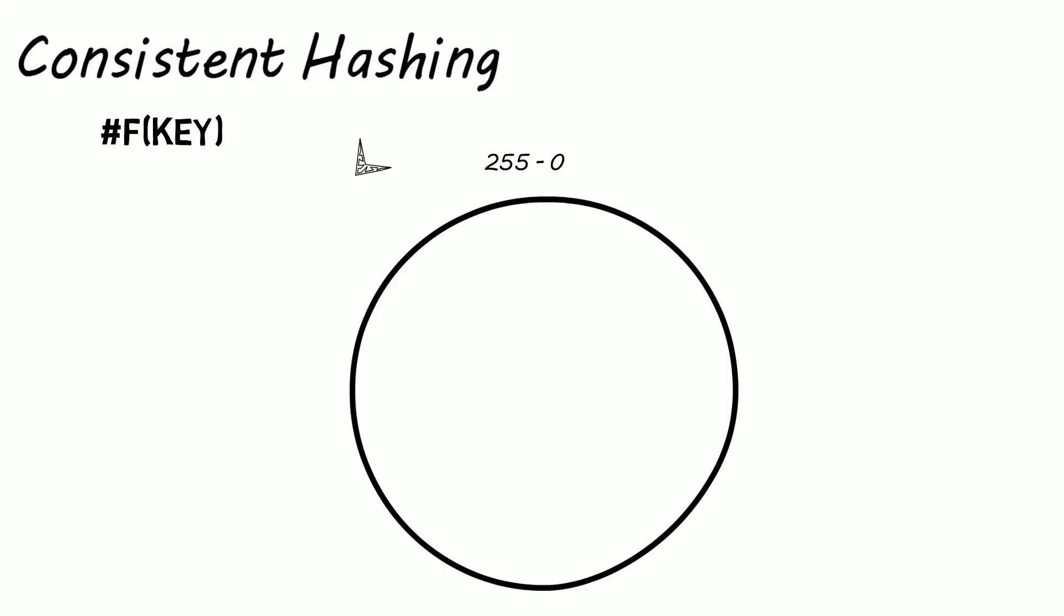Now let's say we have five requests with different IP addresses. We pass each IP through a hash function and distribute them on the ring depending on what the output was.